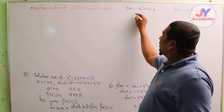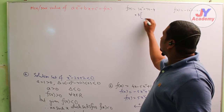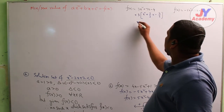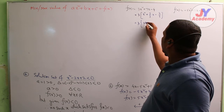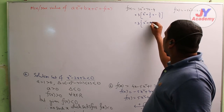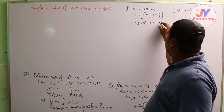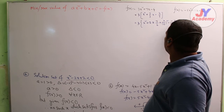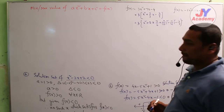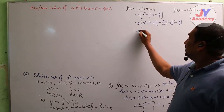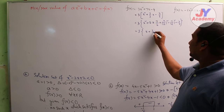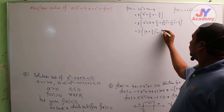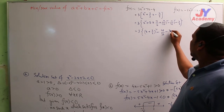By using the completing the square method, that is equal to 3 times [x² + (7/3)x - 4/3]. Now it becomes 3 times [x + 7/6]² minus [7/6]² minus 4/3. Now it is 3 into [x + 7/6]² minus 49/36 minus 4/3.